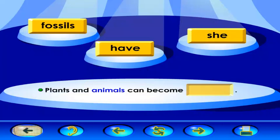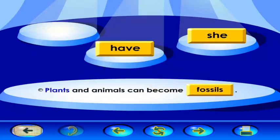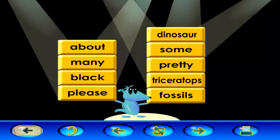Plants and animals can become. Plants and animals can become fossils. Great job learning sight words. Click the go on arrow to go to the next activity.